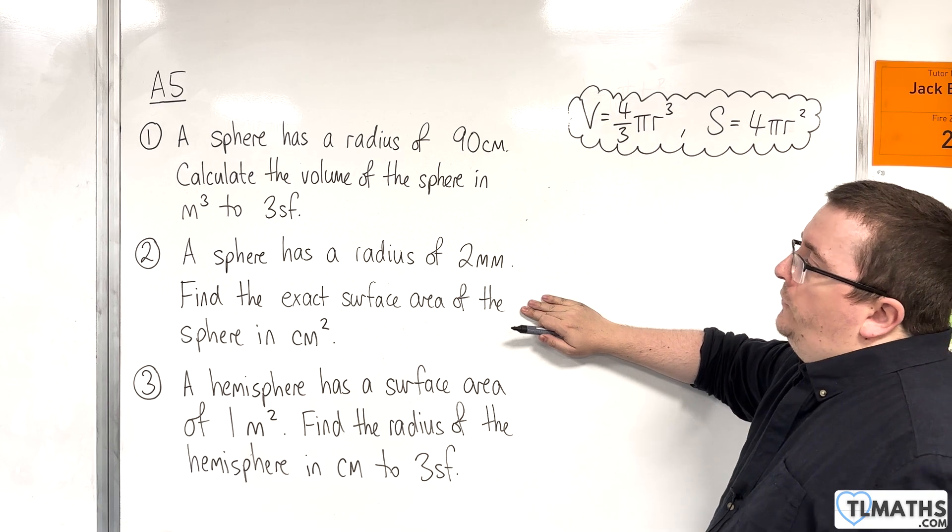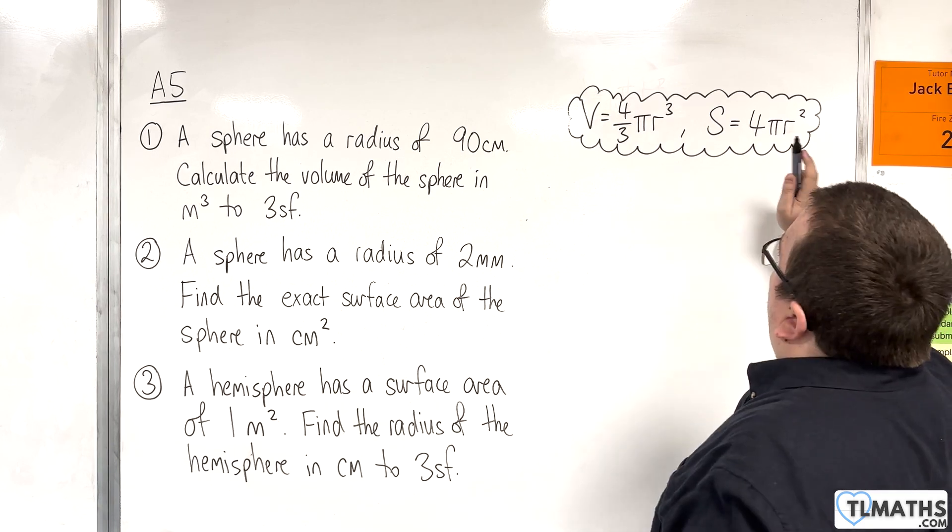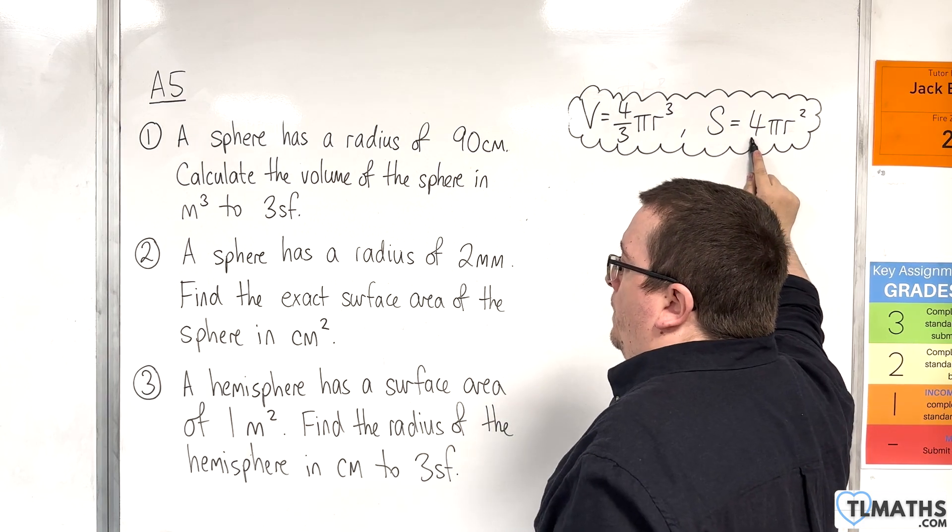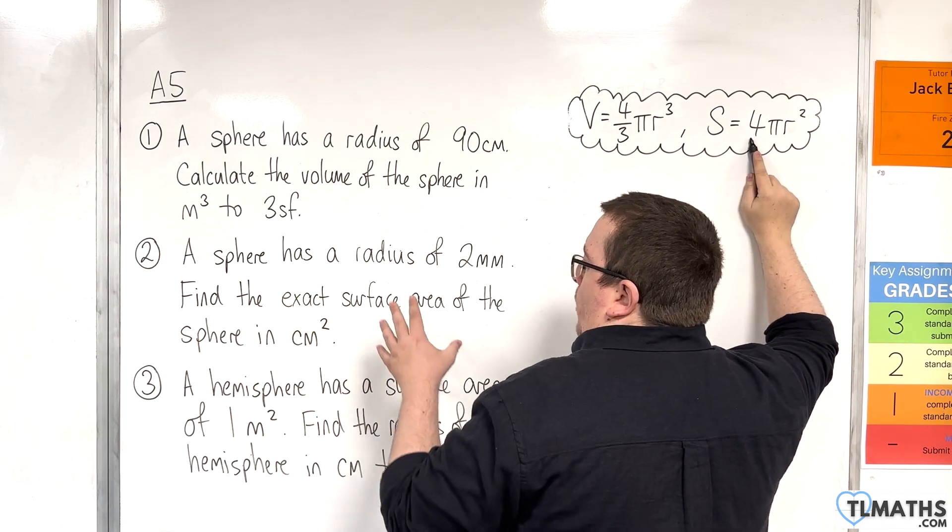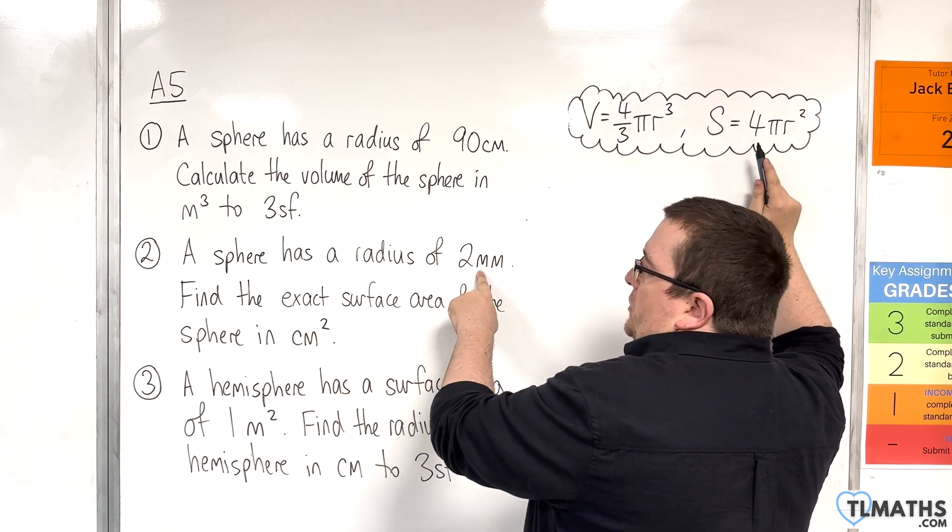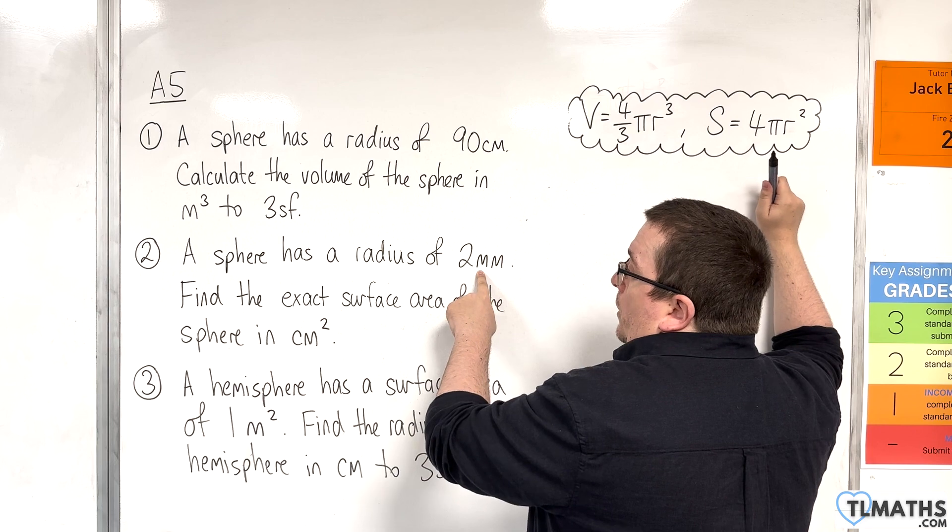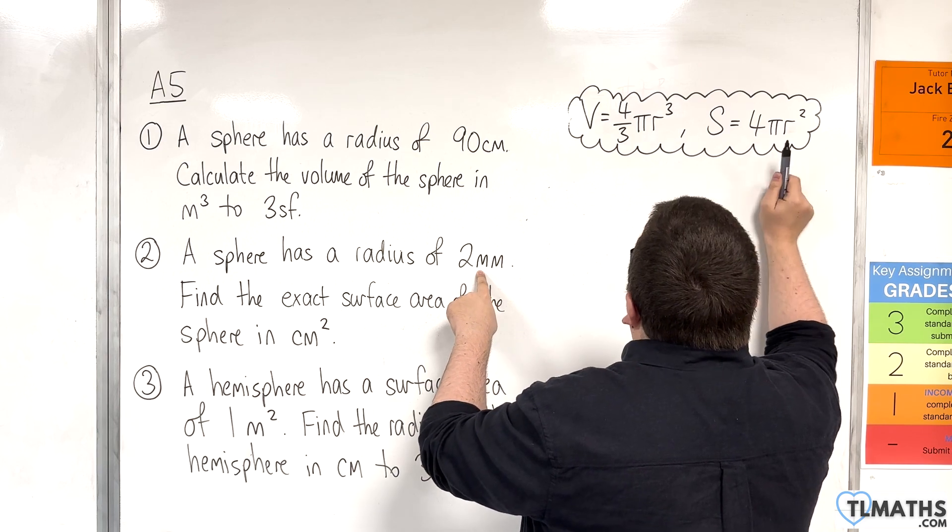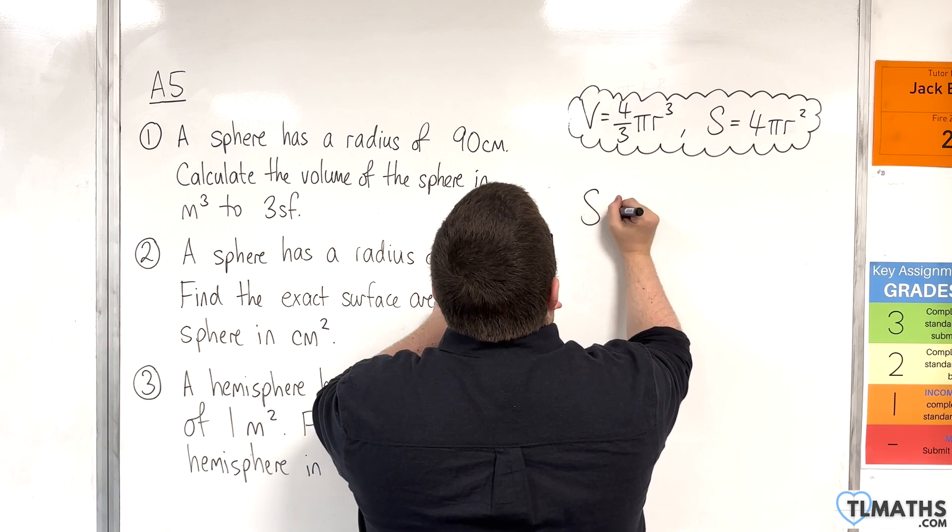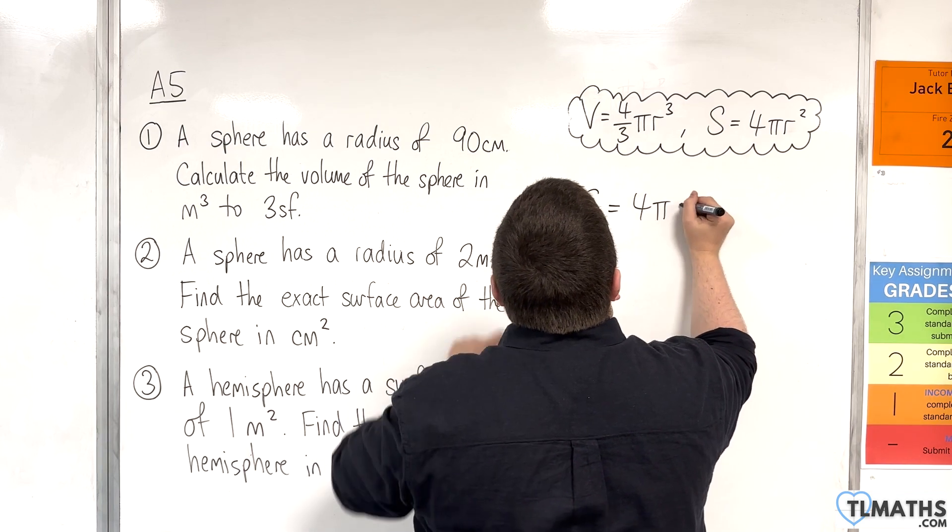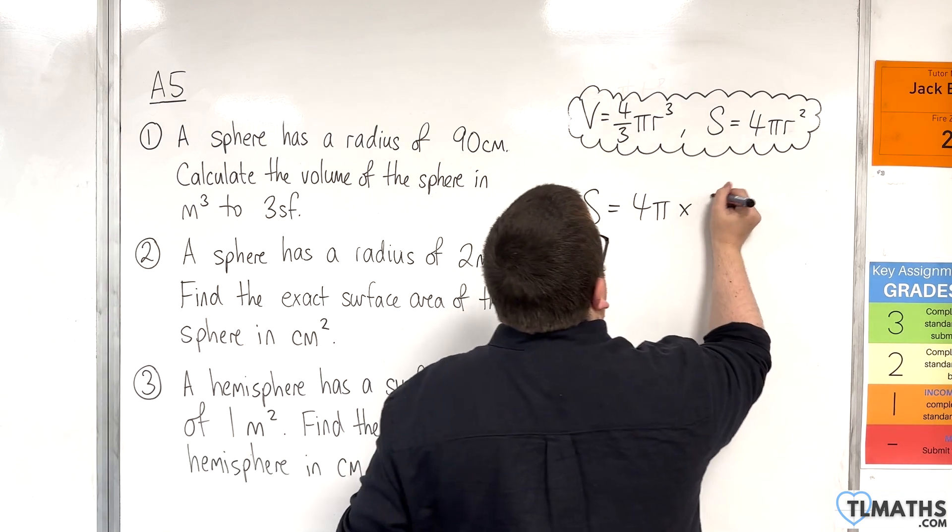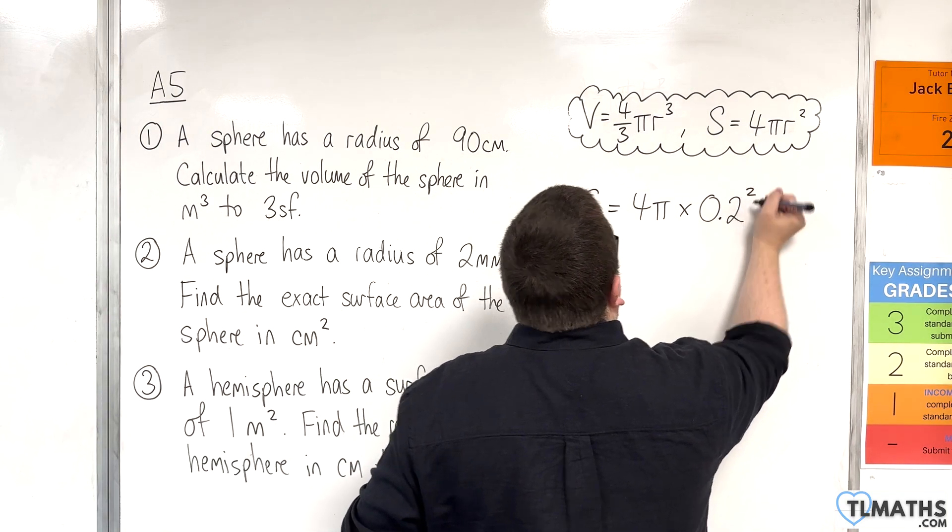OK, so the surface area formula up here is 4 pi r squared. So, because we want the exact surface area in square centimeters, it makes sense to convert this to centimeters before we begin. So, the surface area is 4 pi times r squared. So we're going to use 0.2 centimeters squared.